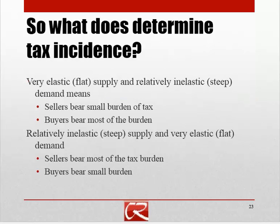So this raises the question: what does determine the tax incidence? What determines who bears what portion of the burden of the tax? What we'll see in the next couple of slides is that if we have very elastic or flat supply and a very steep or inelastic demand curve, then sellers are going to bear a small burden of the tax and buyers are going to bear most of the burden. If we reverse the relative elasticities, then we're going to reverse the relative burdens of the tax.